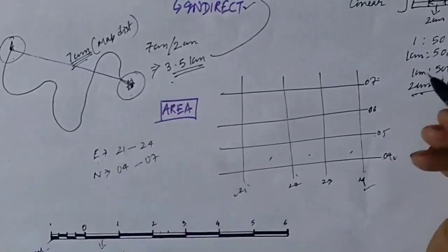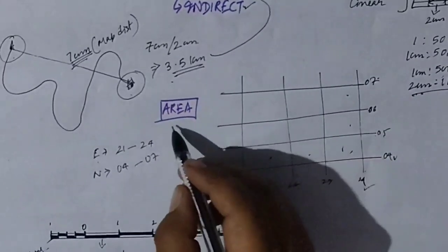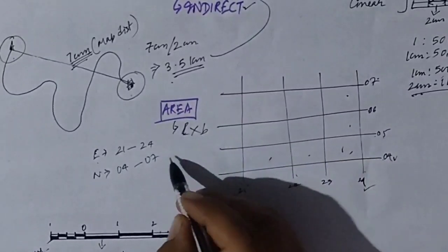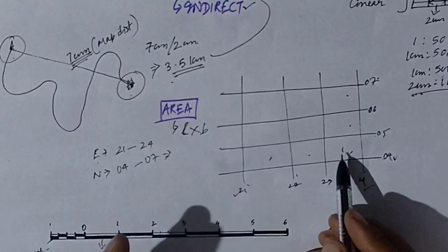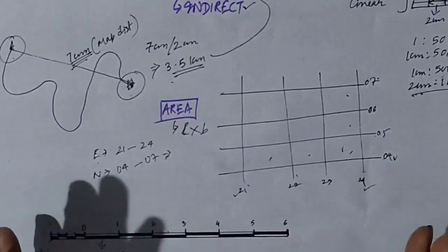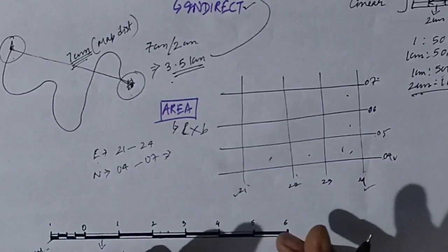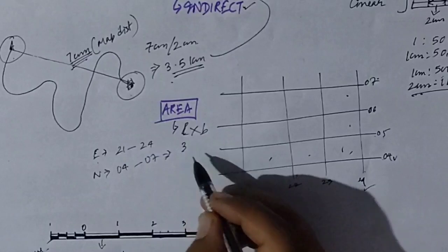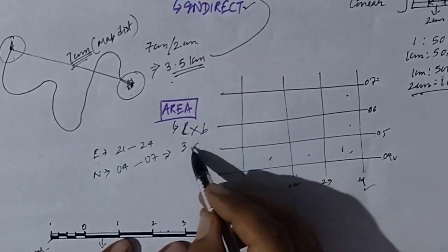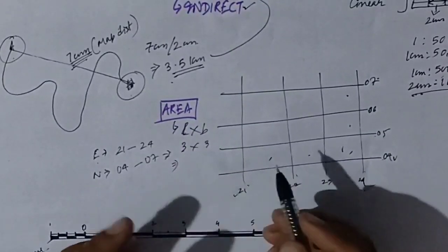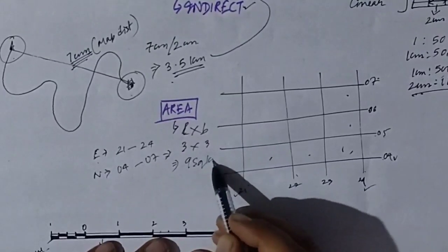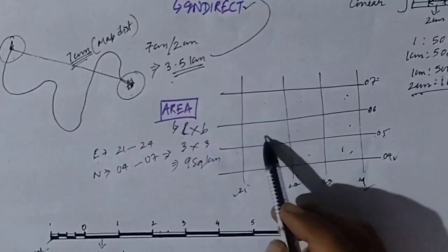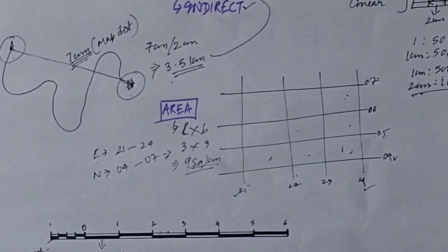Count the boxes: from easting 21 to 24 there are 3 grids, and from northing 04 to 07 there are also 3 grids. The formula for area is length × breadth. Each grid is 2 centimeters representing 1 kilometer on the ground, so each grid equals 1 km. Therefore, 3 × 3 = 9 square kilometers is the area enclosed by eastings 21 to 24 and northings 04 to 07. That concludes today's video — thank you for watching.